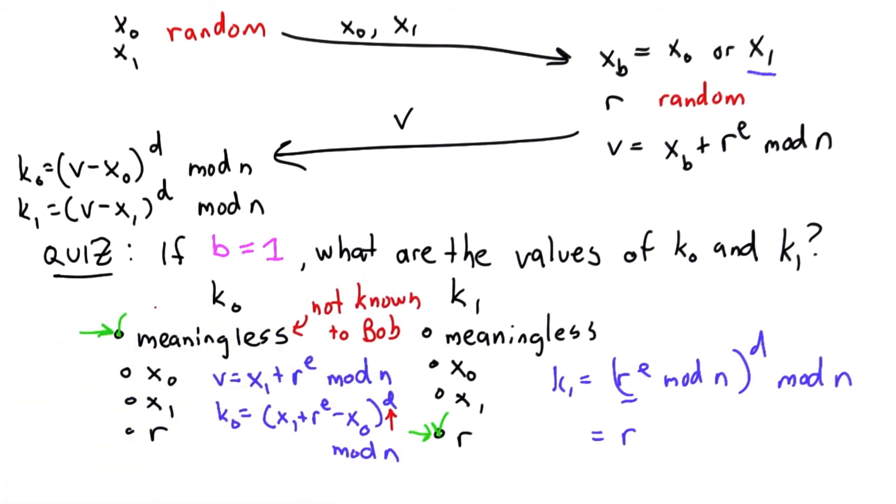So that's the important thing we've done here. Alice has these two keys. Depending on what value Bob picked, one of them is meaningful and has the value r, while the other one is not.